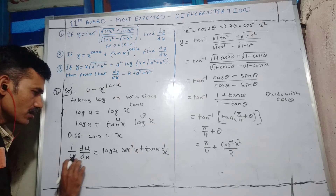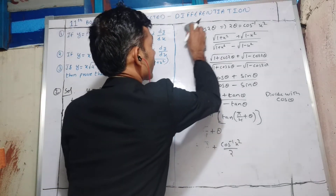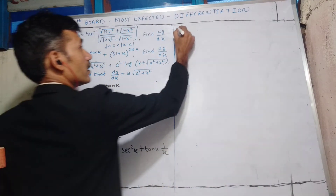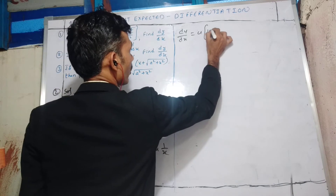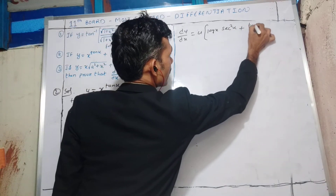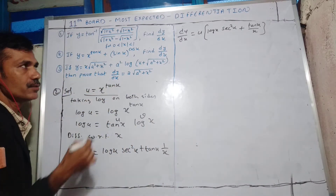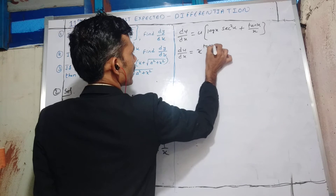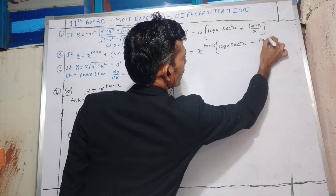Transposing u to the right side: du/dx = x^(tanx) · [log x · sec²x + tanx / x]. This is the du/dx value.